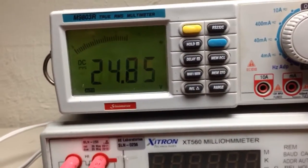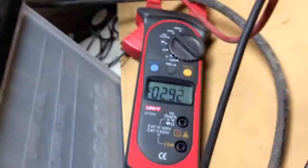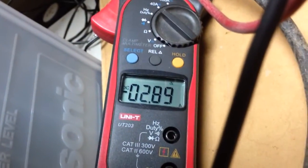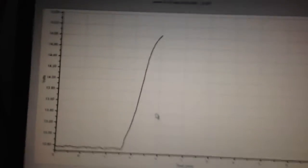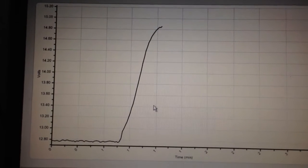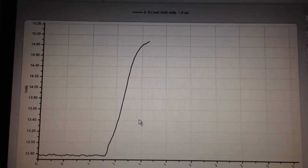So immediately this starts dropping down, 24.8 pulling just under 3 amps out of that. Now we'll have a look at those two batteries that are in parallel, so you can focus on that.